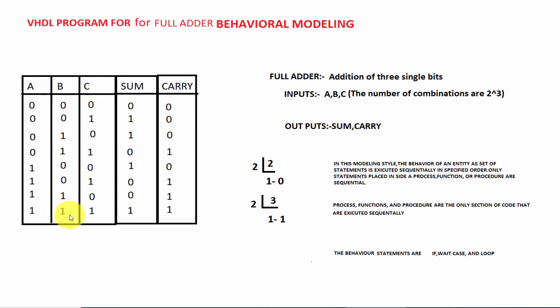For 1 plus 1 plus 1: that equals 2, and 2 plus 1 is 3. The binary value of 3 is found by dividing by 2, giving 1 1. The remainder is 1. This completes the explanation of the truth table.